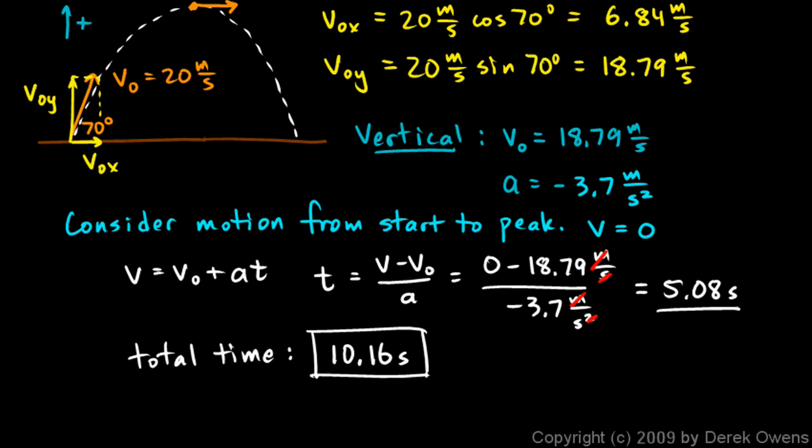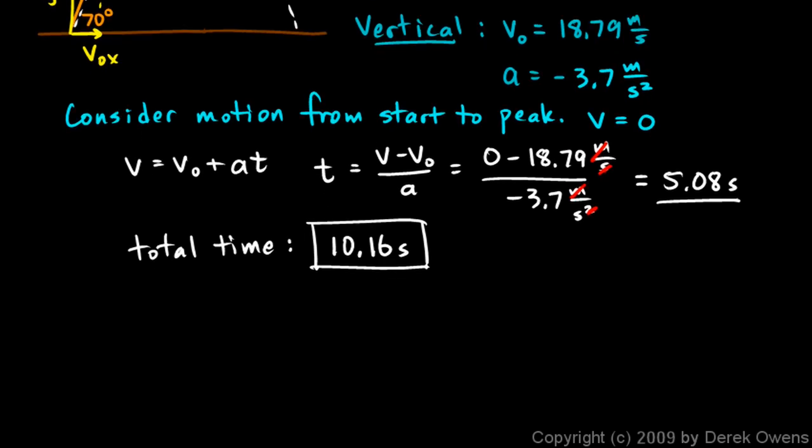And then we're also told to find the height that it reaches, the maximum height. And we do that with this equation. y is equal to y zero plus v zero t plus one half at squared. Now if we want to find the height at the peak, then we need to put in the time here at the peak. And the time at the peak was this number, the 5.08.